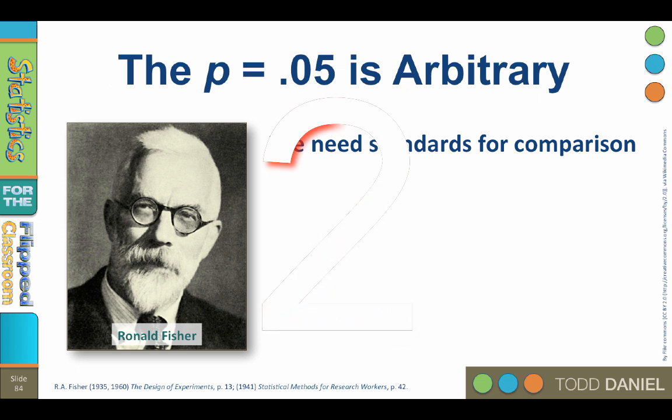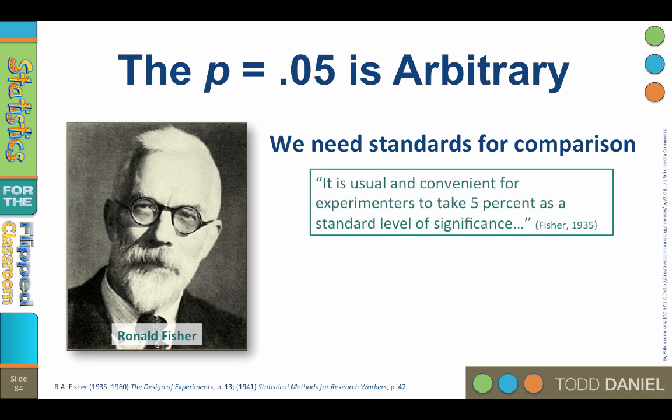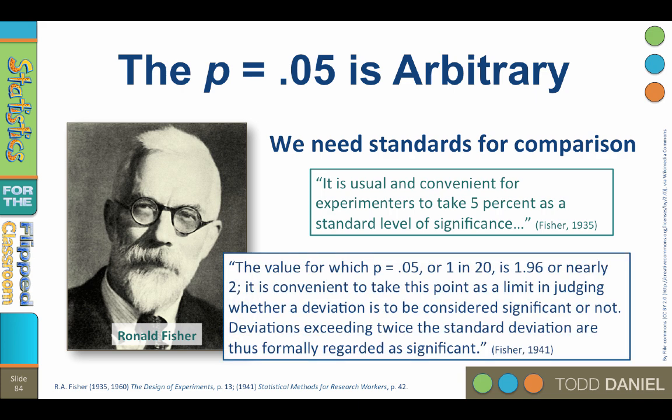P equals 0.05 is arbitrary. Have you ever wondered just where we got this P equals 0.05 standard in the first place? It was suggested by Ronald Fisher, who wrote, It is usual and convenient for experimenters to take 5% as a standard level of significance. So when we are doing statistics, we need some agreed-upon standards for comparison. The alpha of 0.05 is a convenient standard, but even Fisher wasn't adamant about it. The value for which P equals 0.05 or 1 in 20 is 1.96 or nearly 2. It is convenient to take this point as a limit in judging whether a deviation is to be considered significant or not. Deviations exceeding twice the standard deviation are thus formally regarded as significant.